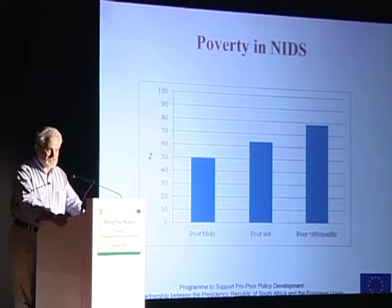NIDS offers us good and reliable information that allows us to use a money metric measure. In this case I've chosen to use consumption as my measure of money metric well-being, and we're able to look at poverty in NIDS.